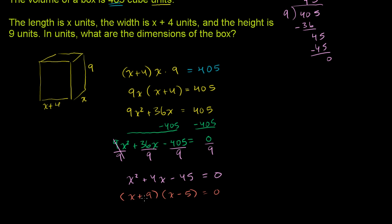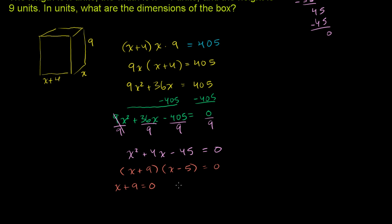If you have two numbers, when you take their product, they equal 0, that means one of these numbers at least has to equal 0. So x plus 9 equals 0, or x minus 5 equals 0. If we subtract 9 from this equation, you get x equals negative 9. Or if you add 5 to both sides, you get x equals 5. So these are both possible values of x.